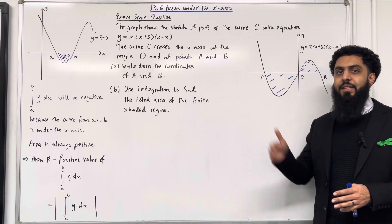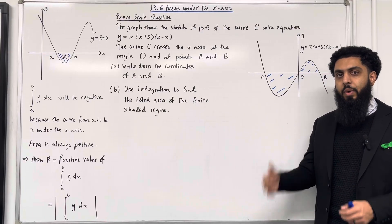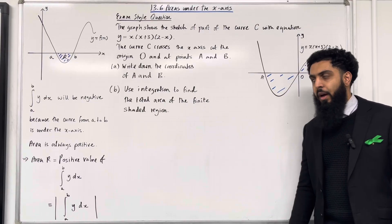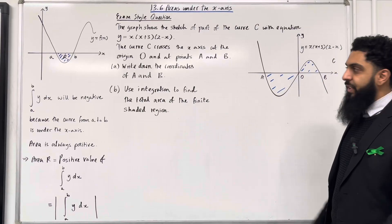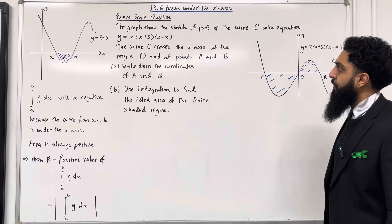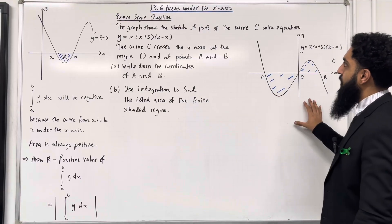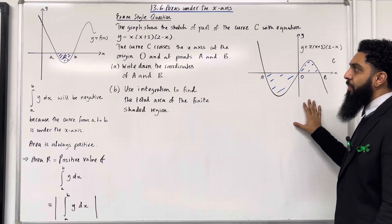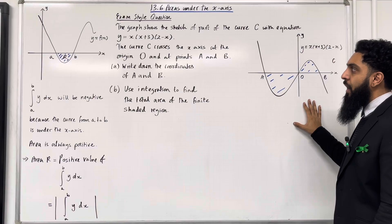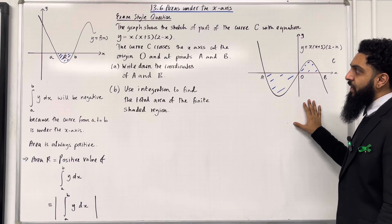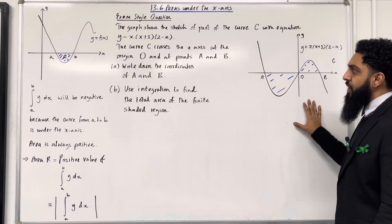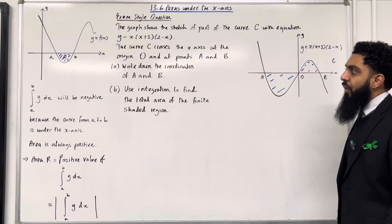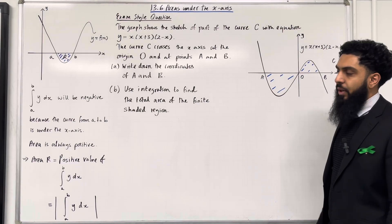I'll be implementing these key facts within an exam-style question. Here is the exam-style question: the graph shows the sketch of part of the curve C with equation y equals x multiplied by (x plus 3) multiplied by (2 minus x). The curve crosses the x-axis at the origin O and at points A and B. Part a: write down the coordinates of A and B.